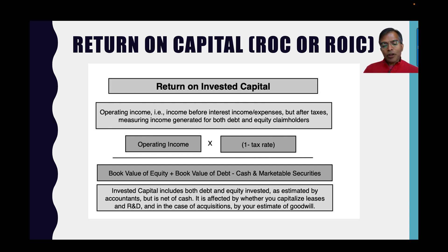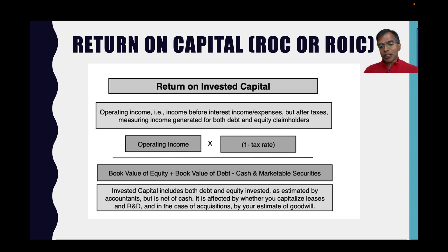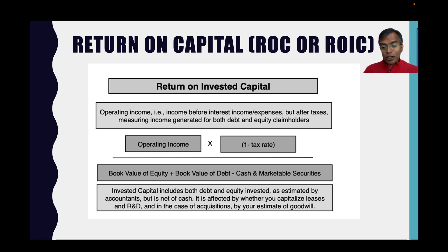For example: you have $100 million in operating income and $40 million in interest expenses. Normally your taxable income is $60 million — 100 minus 40. Say you paid $15 million in taxes, a 25% tax rate on $60 million. I'm going to take that 25% tax rate and apply it on the entire $100 million, because you're computing a return as if you had no debt — operating income net of taxes.